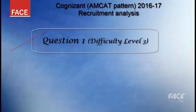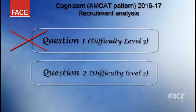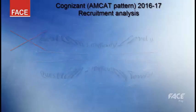If he or she marks a wrong answer for the first question, he or she gets the next question at a lesser difficulty level. This serves as an inbuilt negative marking if not explicitly done. Also, you can't save a question for solving it later. Only after marking the answer will you get the next question.